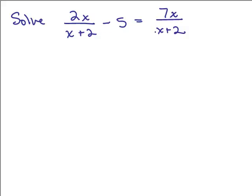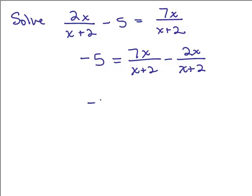However, you can alter this slightly if you want to make it look like a proportion, because you see that you've got two terms that have the same denominator. So one way of doing that is subtract 2x over x plus 2 from both sides of the equation. So if I did that, I would have the negative 5 on the left side, and on the right side 7x over x plus 2 minus 2x over x plus 2 is negative 5 equals 5x over x plus 2.